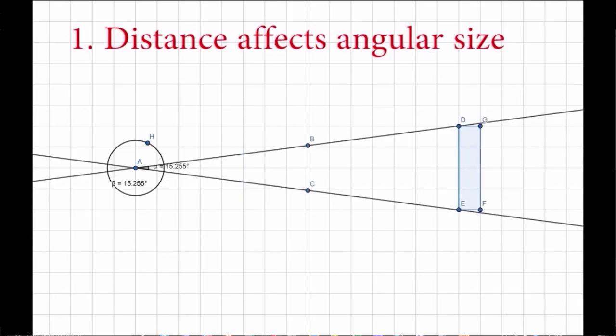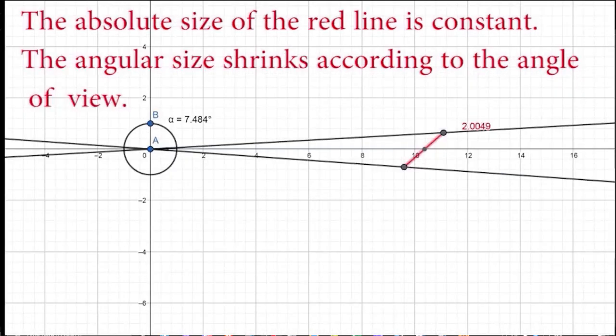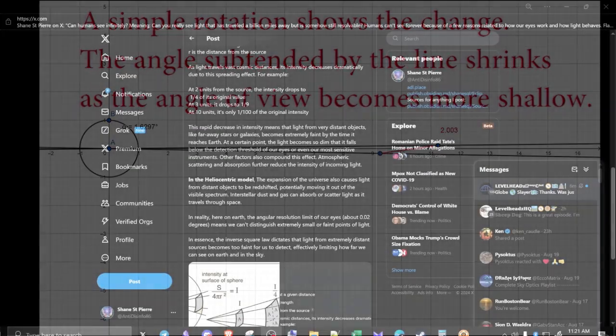The inverse square law would mathematically dictate that light from extremely distant sources becomes too faint for us to detect, effectively limiting how far we could see on Earth and in the sky. That's it for today.